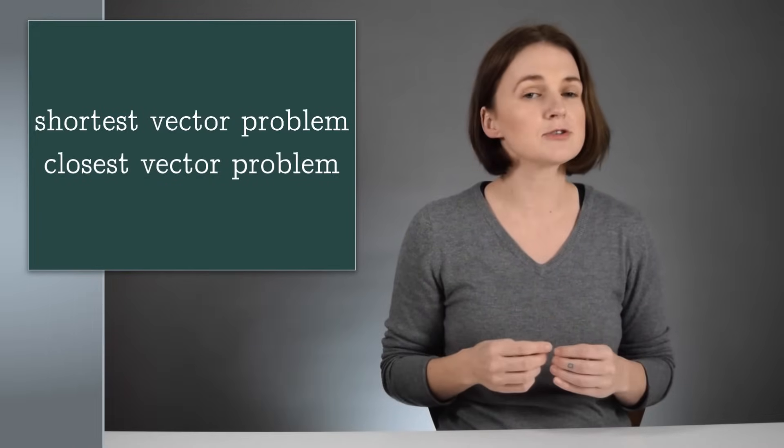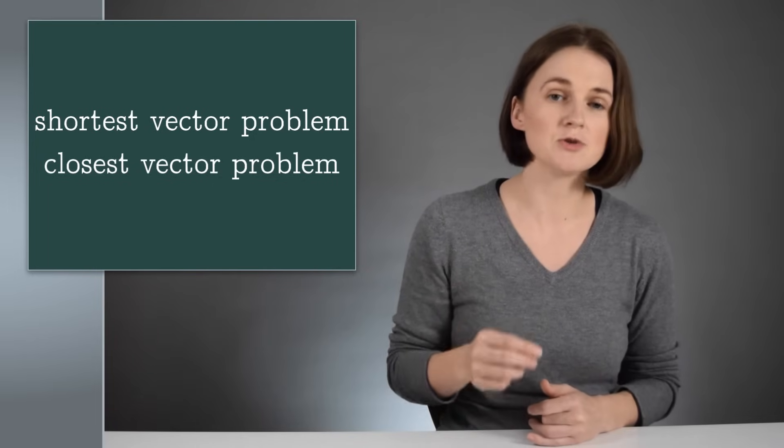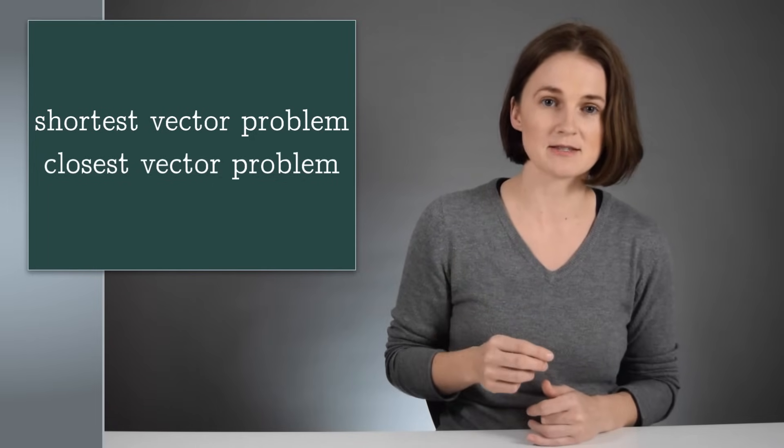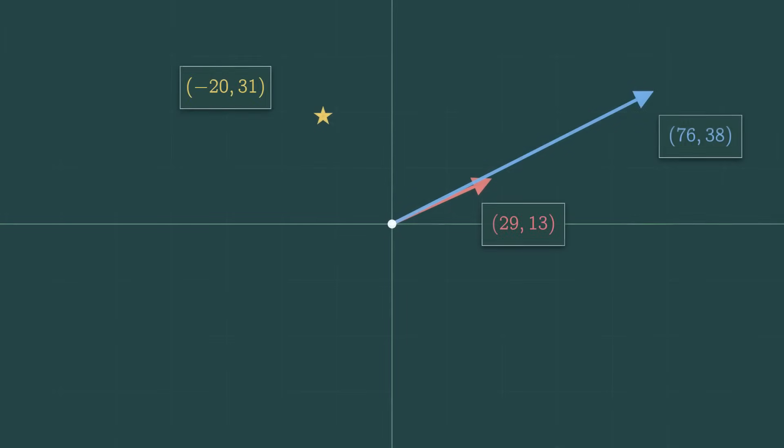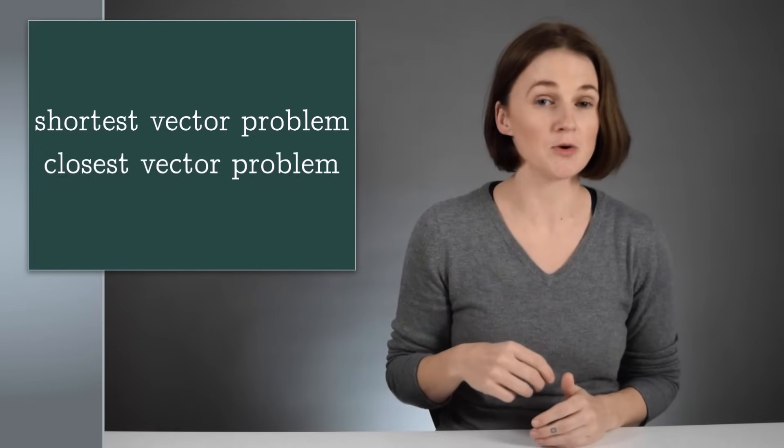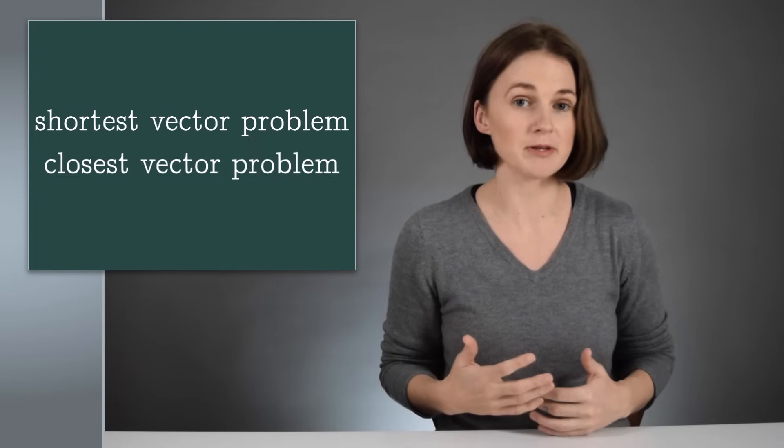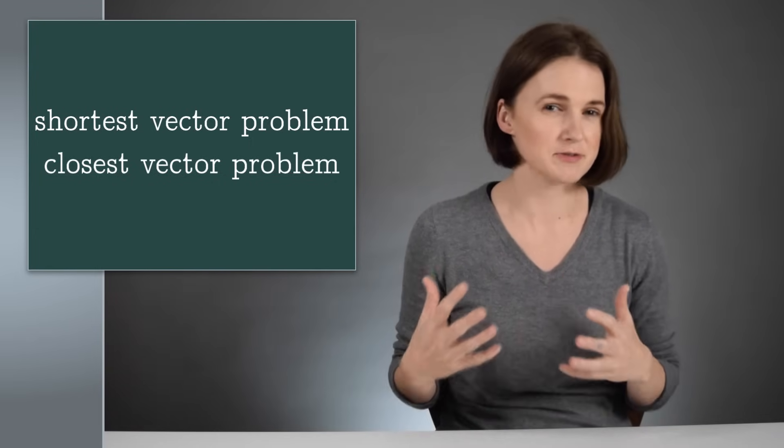The shortest vector problem is similar to the closest vector problem. Find the lattice point which is closest to a particular point in space. For example, which point on the lattice generated by the two vectors from before is closest to negative 20 31? These belong to a collection of related problems known as lattice problems, which experts believe to be hard problems, especially in hundreds of dimensions.